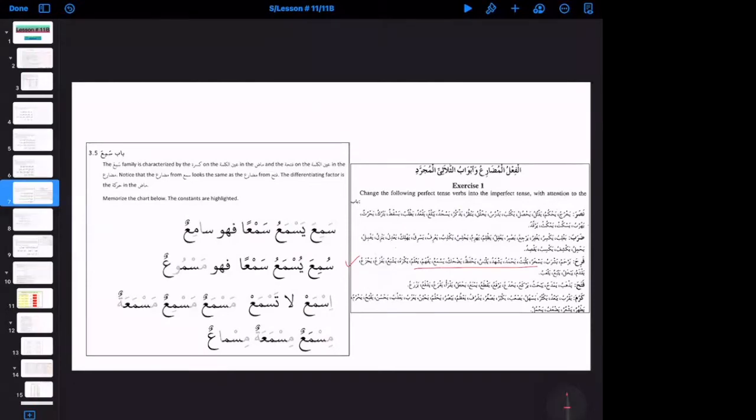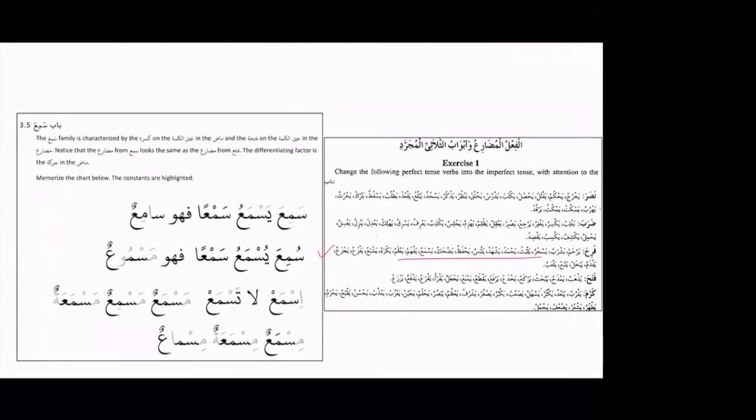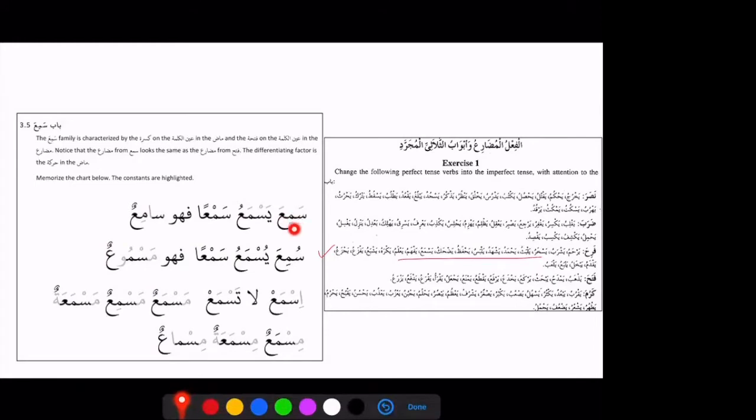I'm going to move on to Bab Samia. This is the Bab that we are supposed to do today. So Bab Samia, this is our fail. In Madhi, you can see that so far we have Bab Nasara, we did Bab Darabha, and we did Bab Fataha. All these three Babs in Madhi were having Fatha. But this is the first clan we are learning today which is taking Kasra on the middle root letter in Madhi.